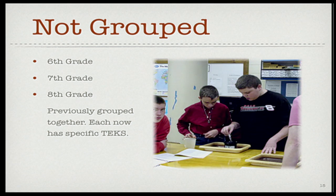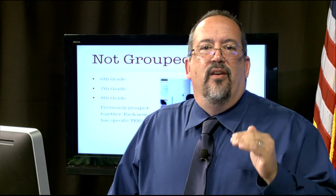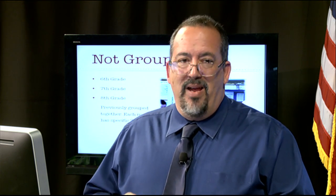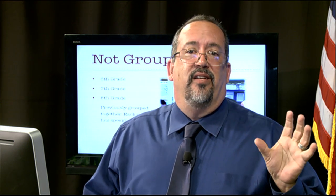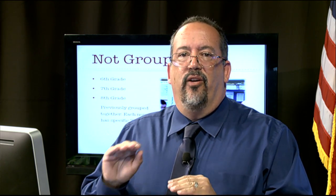A big difference between the previous TEKS and the new ones is in middle school. Previously, grades six to eight were grouped together, but now sixth grade, seventh grade, and eighth grade each have their own specific set of Technology Application TEKS. They still follow the six strands, but each grade level has specific requirements. One reason for this change is that many districts held off technology until eighth grade, so students weren't getting any formal technology education until that one class. Now, students are required to engage with technology in every grade level at middle school.